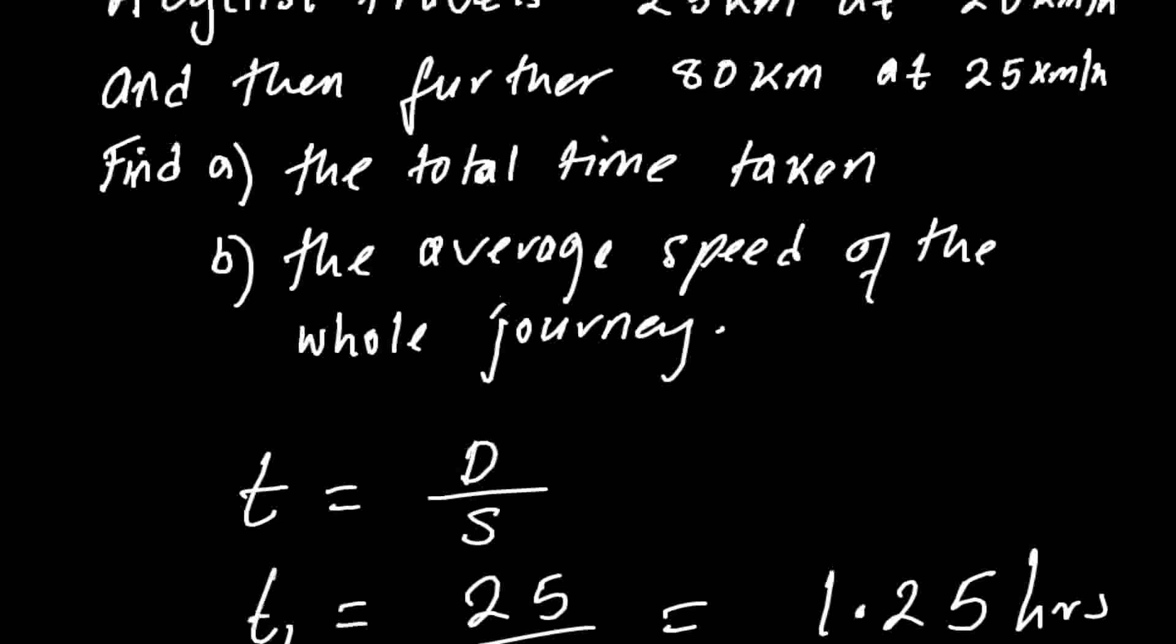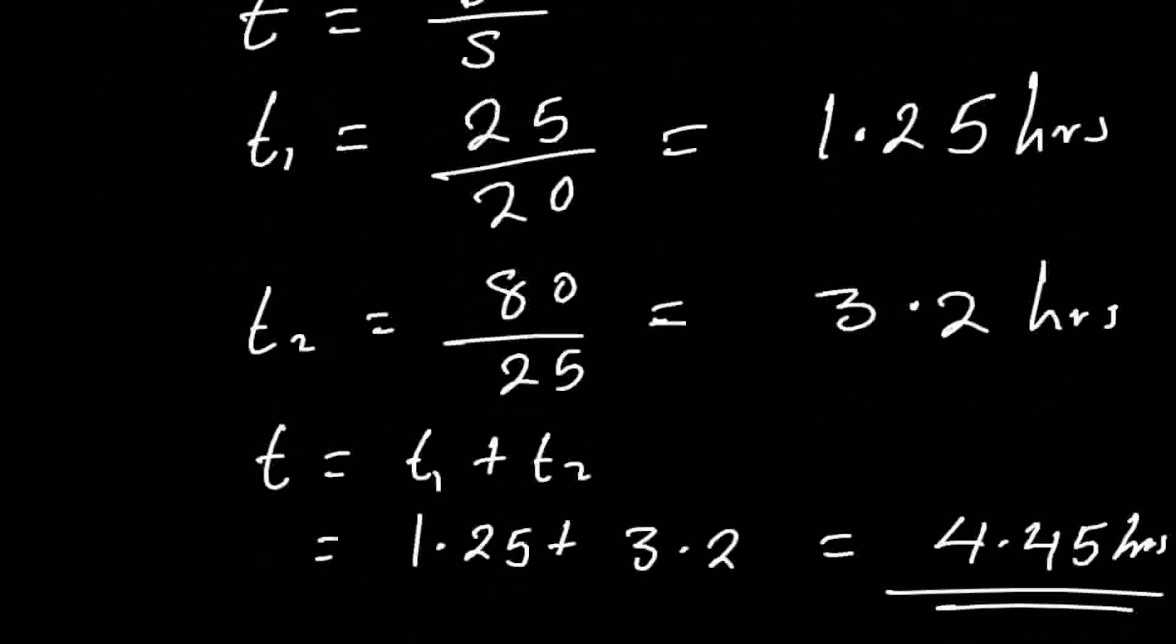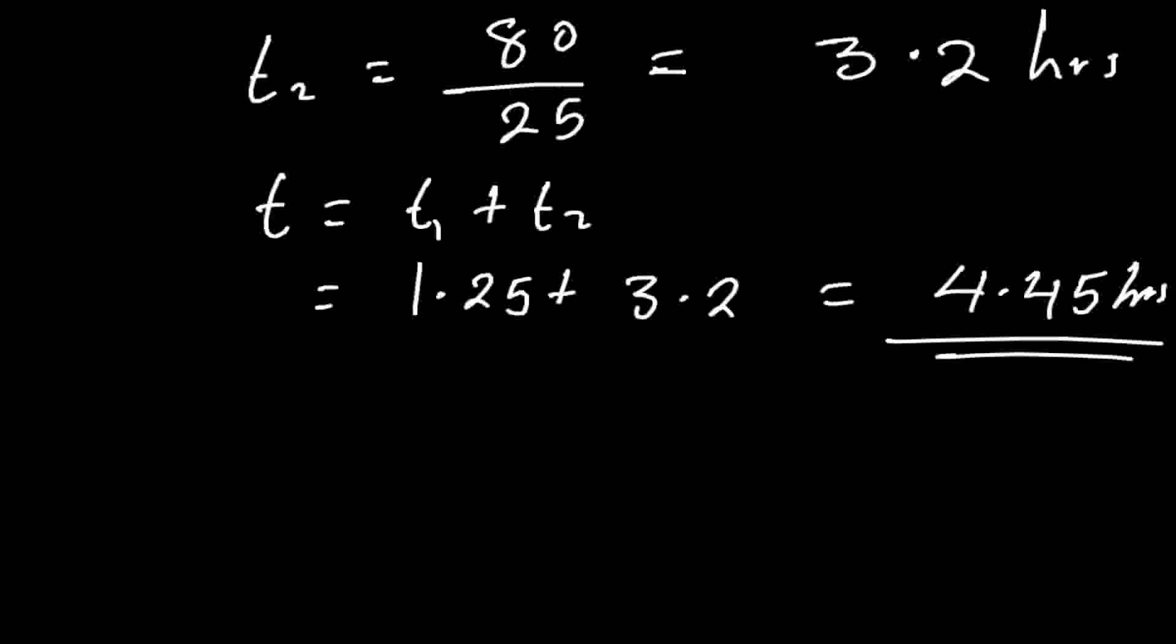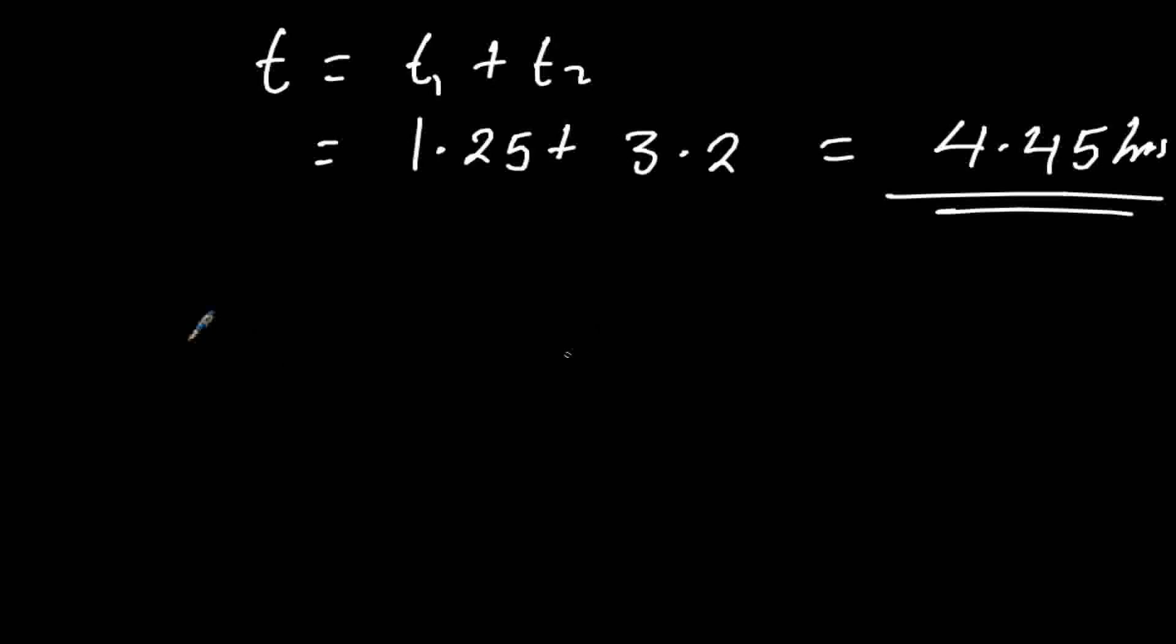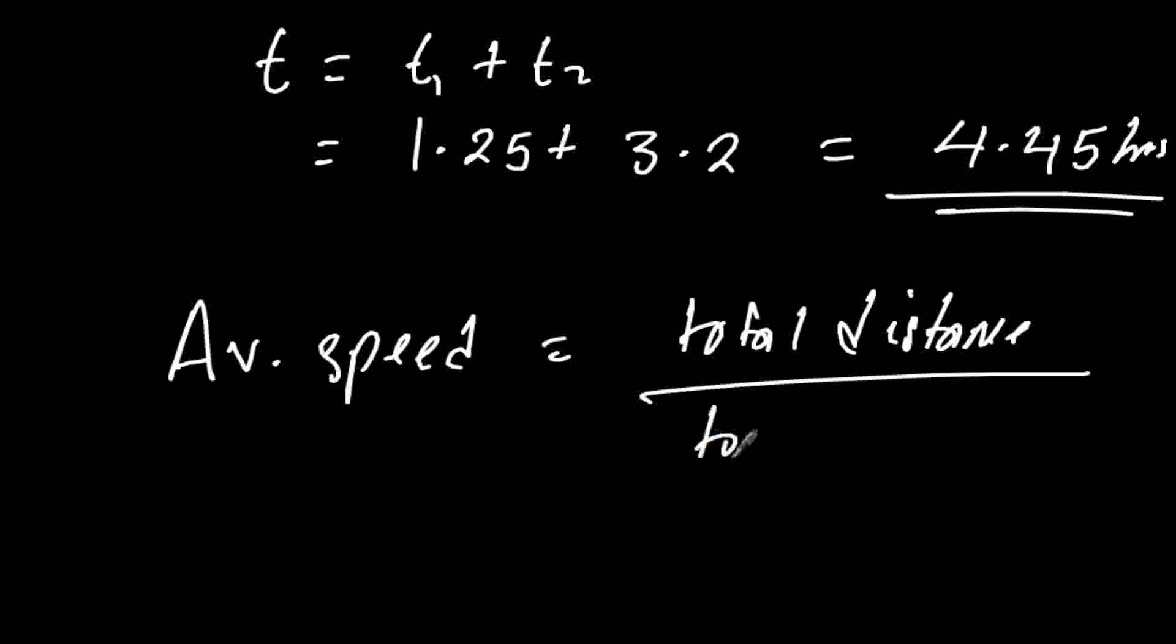Then part b is asking for the average speed of the whole journey. Average speed is equal to total distance traveled divided by the total time.